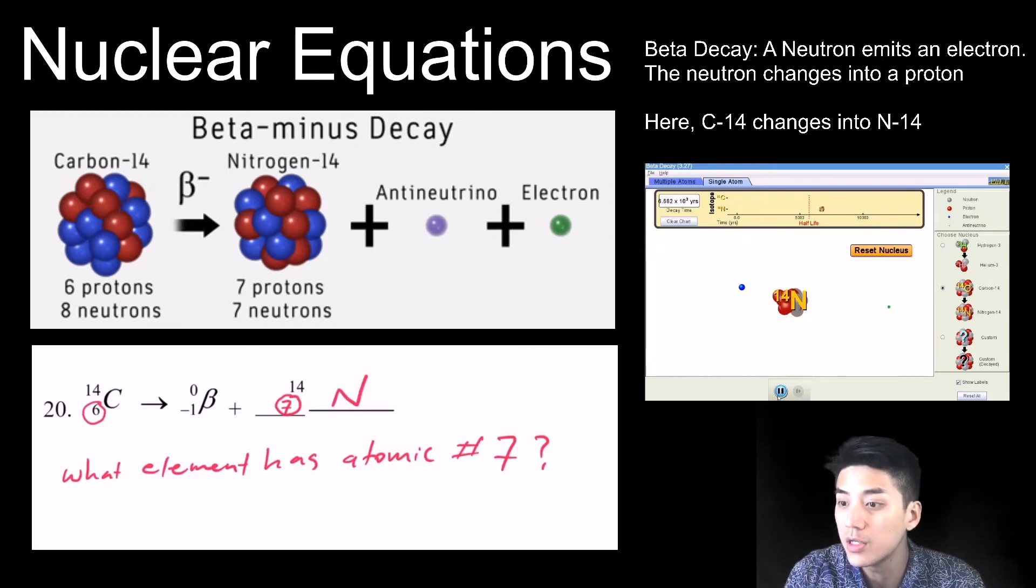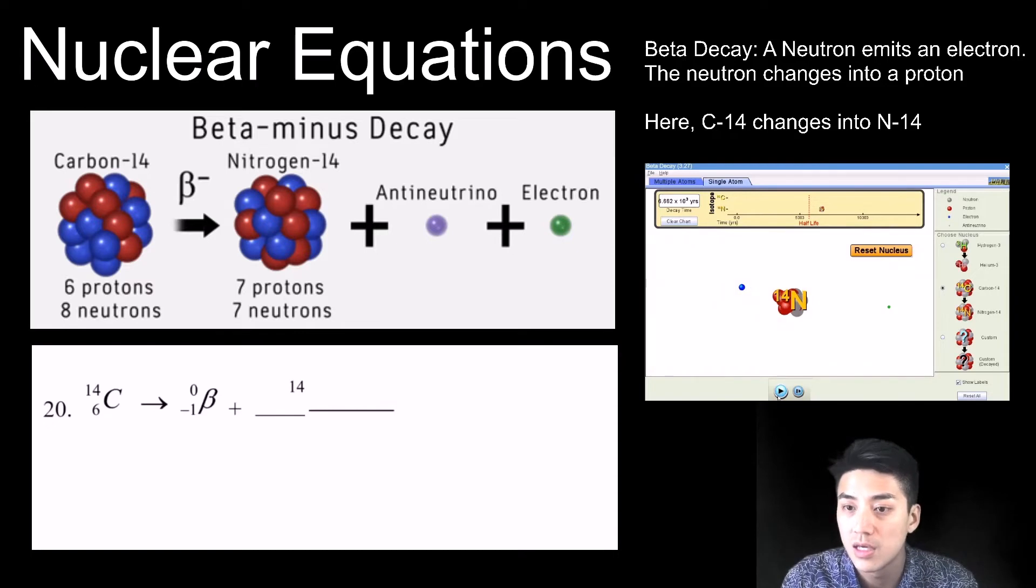And now that I have 7, I'm going to ask myself, which element has atomic number 7? Which one has 7 protons? It's going to be nitrogen.